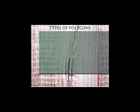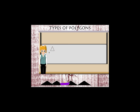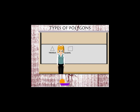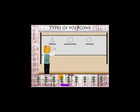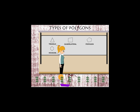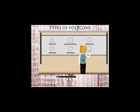Types of Polygons. Teacher Nancy is on the board making some figures with straight line segments. She makes a three-sided triangle, a four-sided quadrilateral, a five-sided pentagon, a six-sided hexagon, a seven-sided heptagon, and an eight-sided octagon.